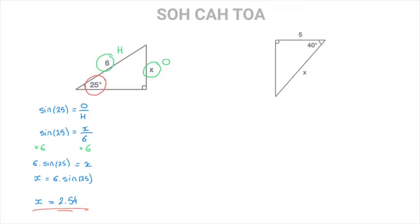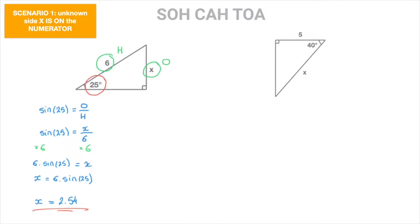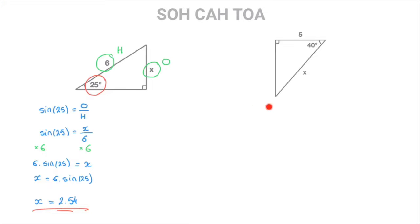That's the first scenario. Notice that the unknown side length X ended up on the numerator on the right-hand side of the equation. Now let's use this second example to remind ourselves of how to deal with the scenario in which the unknown side length X ends up on the denominator.